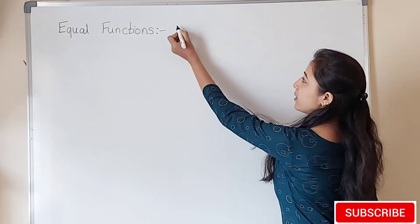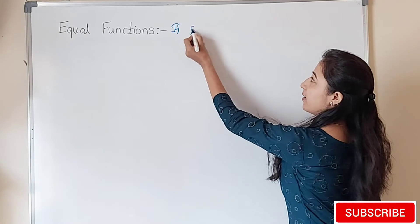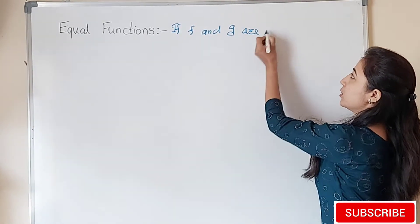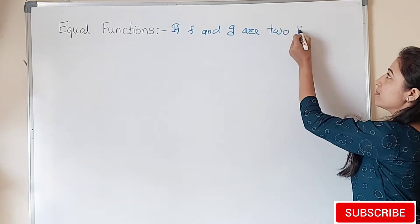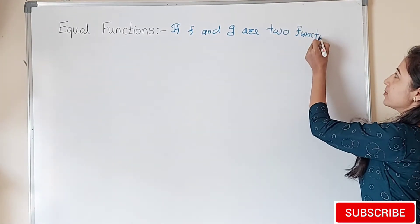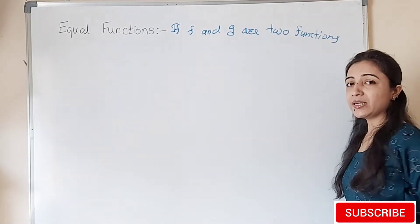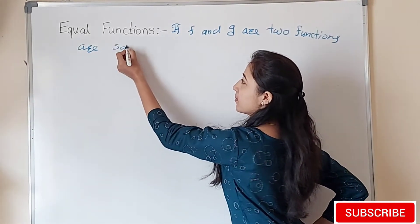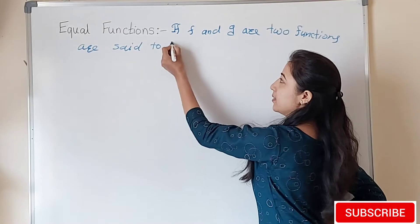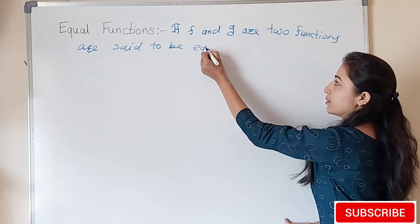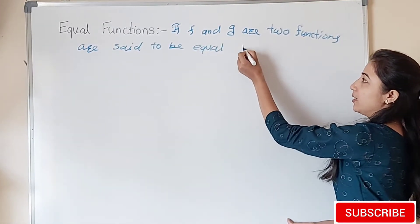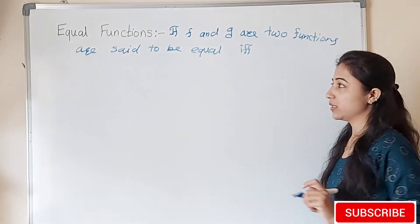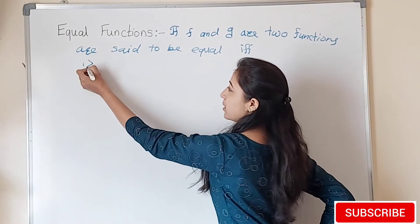So here suppose we have given two functions. If f and g are two functions, they are said to be equal if and only if they satisfy three conditions. Number one, their domain must be equal: domain of f equals domain of g. Second condition is their codomain must be equal.